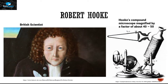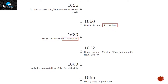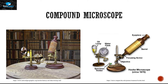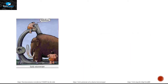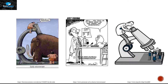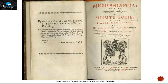In the same era, another British scientist named Robert Hooke discovered his own microscope, which could magnify by a factor of 40 to 50. This scientist was not a biologist — he was more interested in physics, known for discovering Hooke's law and the balance spring. But he used his compound microscope to see almost literally everything he could under it.